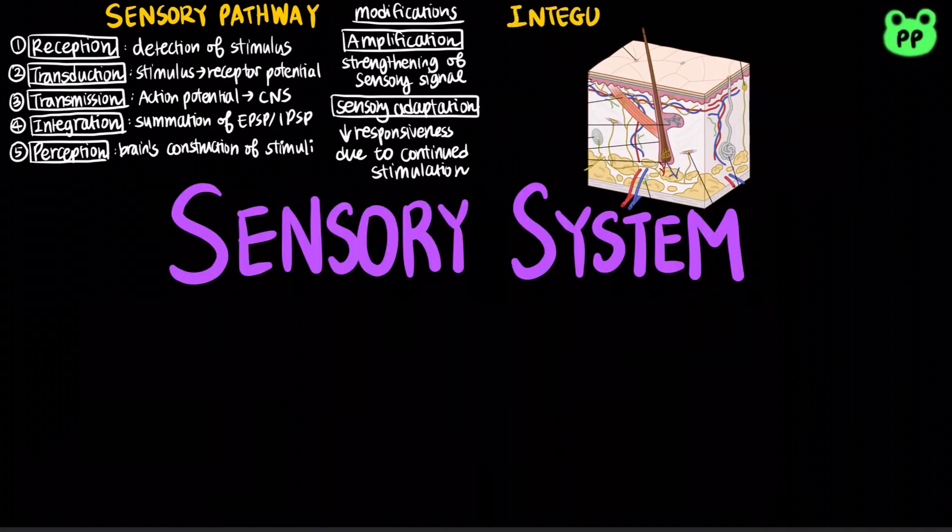The integumentary system is an organ system consisting of the skin, hair, nails, and exocrine glands.